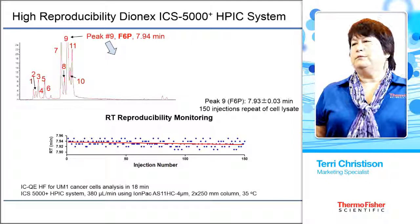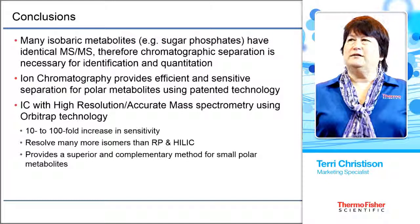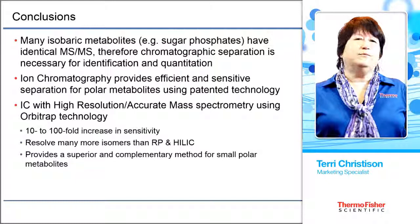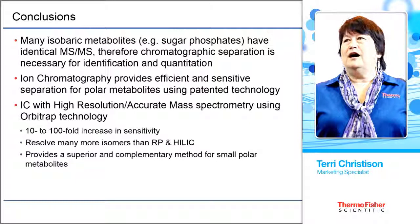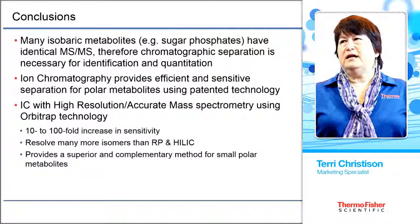In conclusion, many isobaric metabolites — for example, the difficult sugar phosphates — have identical MS-MS fragmentation patterns. Therefore, chromatography separations are necessary for identification and quantification. Ion chromatography provides an efficient and sensitive separation for small polar metabolites using our patented technology. IC with high-resolution accurate mass spectrometry uses our patented Orbitrap technology, giving a 10 to 100-fold increase in sensitivity. We can resolve many more isomers than reverse phase and HILIC, and it provides a superior and complementary method for small polar metabolites. Thank you.